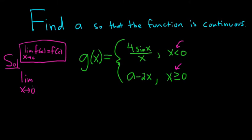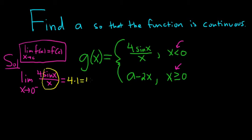For the limit from the left — approaching 0 from the left — we use the top piece because x is less than 0. So we have 4 sine x over x. This is a special limit from calculus: sine x over x approaches 1 as x approaches 0. So this is 4 times 1, which equals 4.